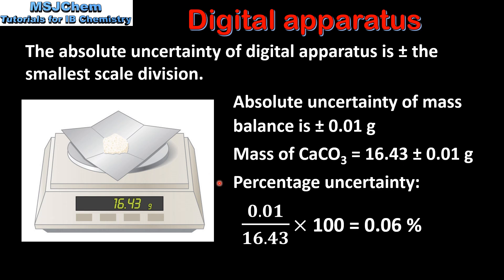Next we'll calculate the percentage uncertainty. To calculate the percentage uncertainty you divide the absolute uncertainty of the mass balance by the recorded measurement and then multiply by 100. This gives us a percentage uncertainty of 0.06%. In this example the percentage uncertainty is written to one significant figure.